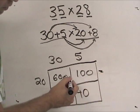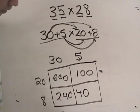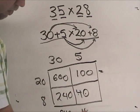What a lot of people then like to do is, they like to add them straight down. So 600 plus 240 is 840, and 100 plus 40 is 140.